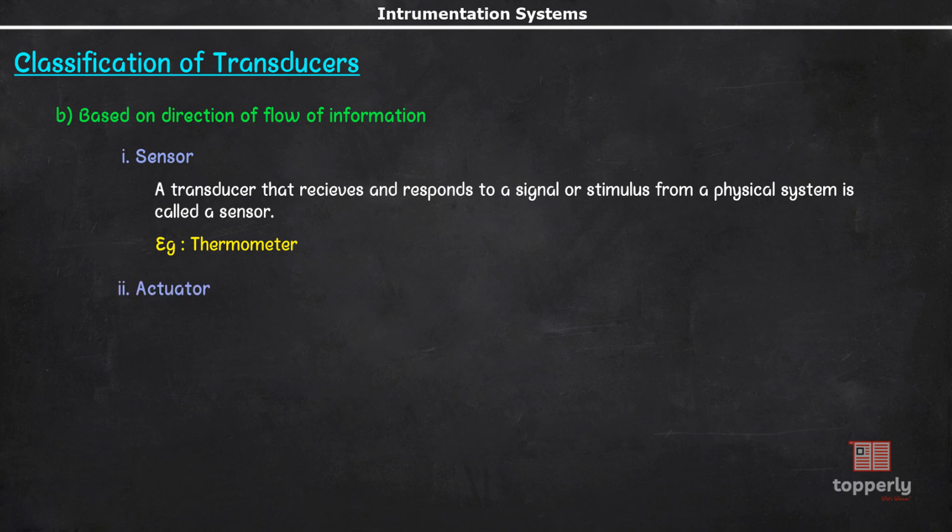Now, coming to the second class, an actuator. An actuator is a device that is responsible for moving or controlling a mechanism or system. In other words, an actuator is a mechanism by which a control system acts upon an environment. An electric motor can be considered as an actuator as it converts electrical energy into mechanical energy.